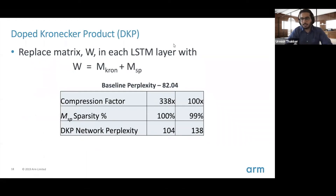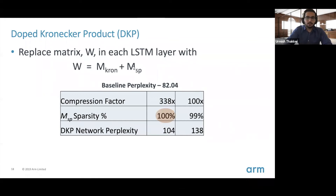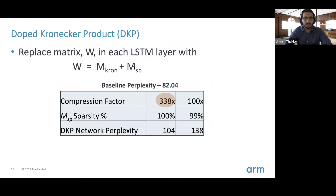We compressed that NLP application using vanilla Kronecker product and using DOPE Kronecker product. With vanilla Kronecker product compression — where the sparse matrix does not exist — we got 38x compression, an insanely large value. But we also saw a huge loss in accuracy: perplexity increased from 82 to 104, around a 20–30% loss, essentially rendering the application useless.